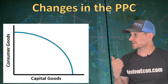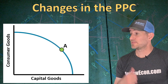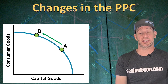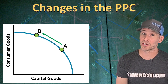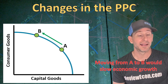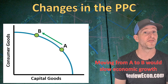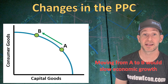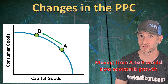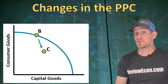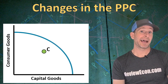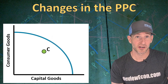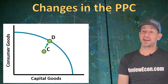Now we have a Production Possibilities Curve with consumer goods and capital goods. If the economy moves from producing a lot of capital goods and not many consumer goods to point B, where we produce fewer capital goods and more consumer goods, that's going to slow economic growth because there will be a smaller amount of physical capital being produced — and capital goods are the physical capital used to produce both capital goods and consumer goods. If our economy moves into a recession, that moves us inside the curve as unemployment increases. As the economy reaches long-run equilibrium again and workers get back to work, it puts us back on the curve at point D.